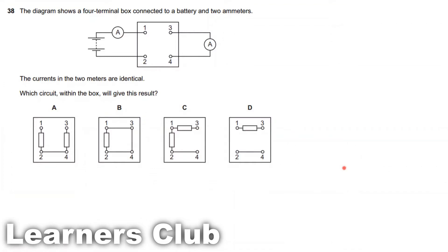The diagram shows a four terminal box connected to a battery and two ammeters. The current in the two meters are identical. Which circuit within the box will give this result? So they have mentioned this ammeter and this ammeter registers the same current, which means the same circuit current passes through.